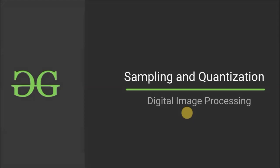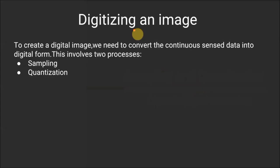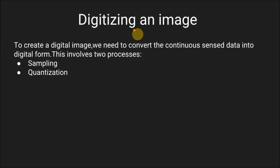Hi everyone, welcome to GeeksforGeeks. In this video we are going to learn the concept of sampling and quantization. First is digitizing an image. To create a digital image we need to convert the continuous sensed data into digital form. This continuous sensed data means the analog signal that we get while capturing an image, and this digitizing will involve two processes: sampling and quantization.